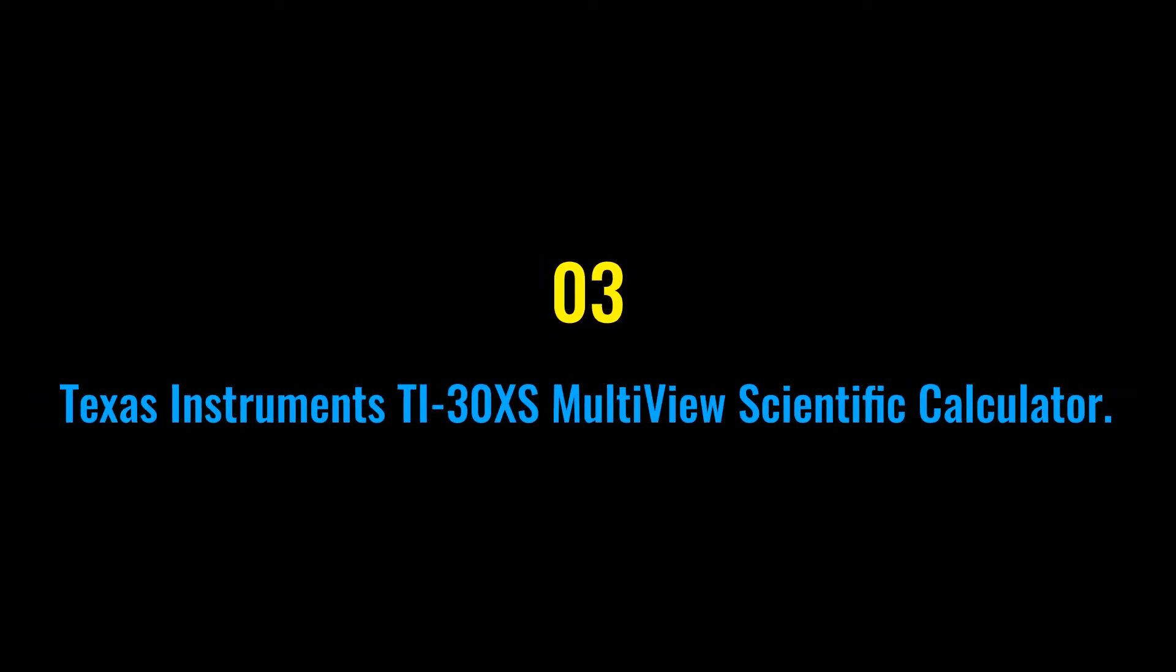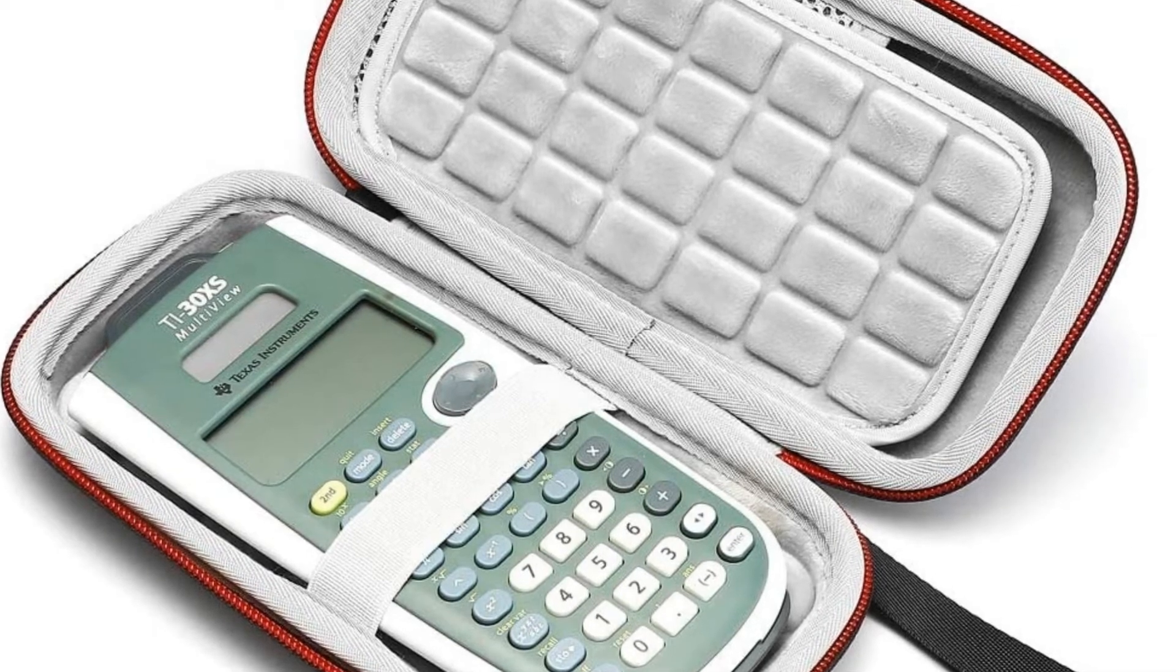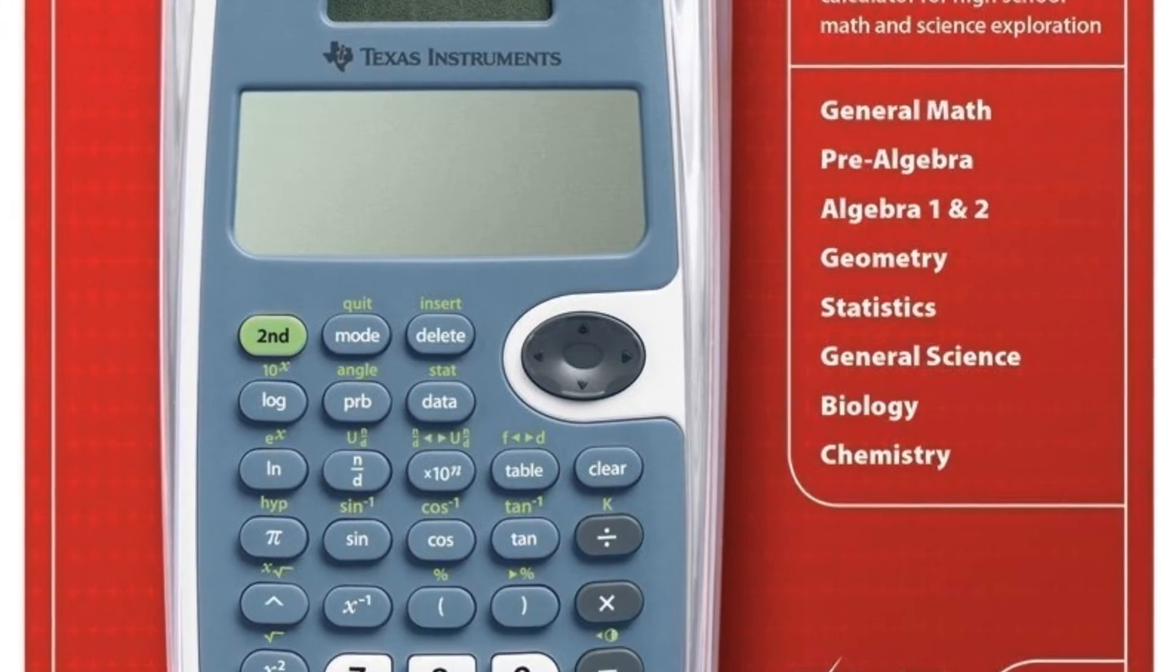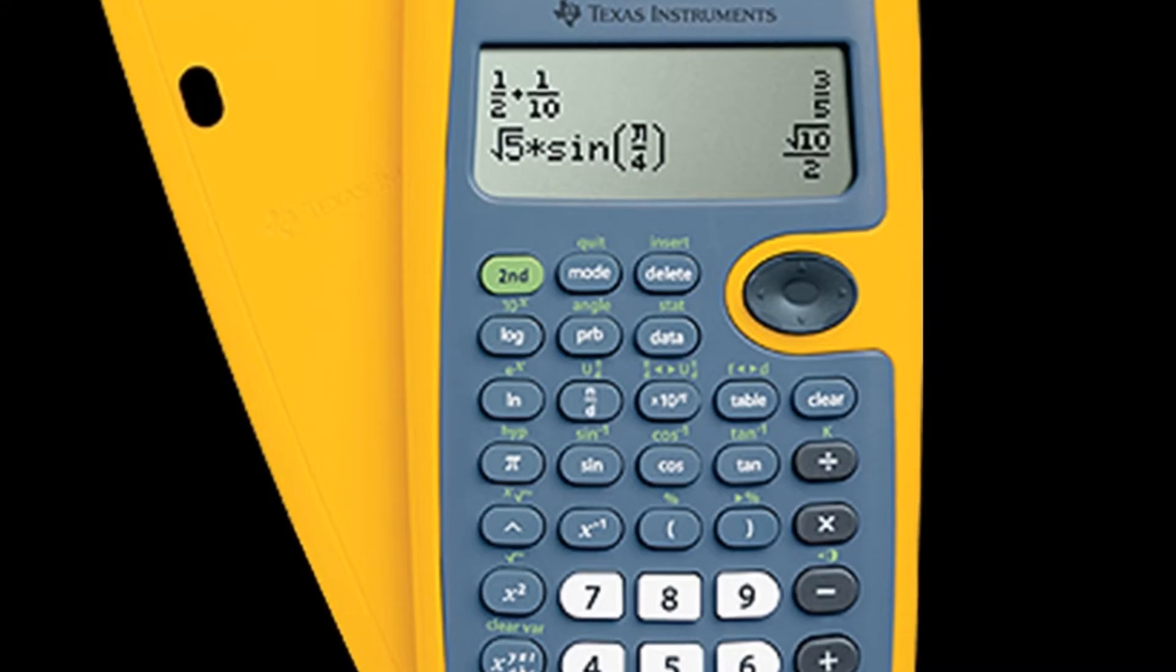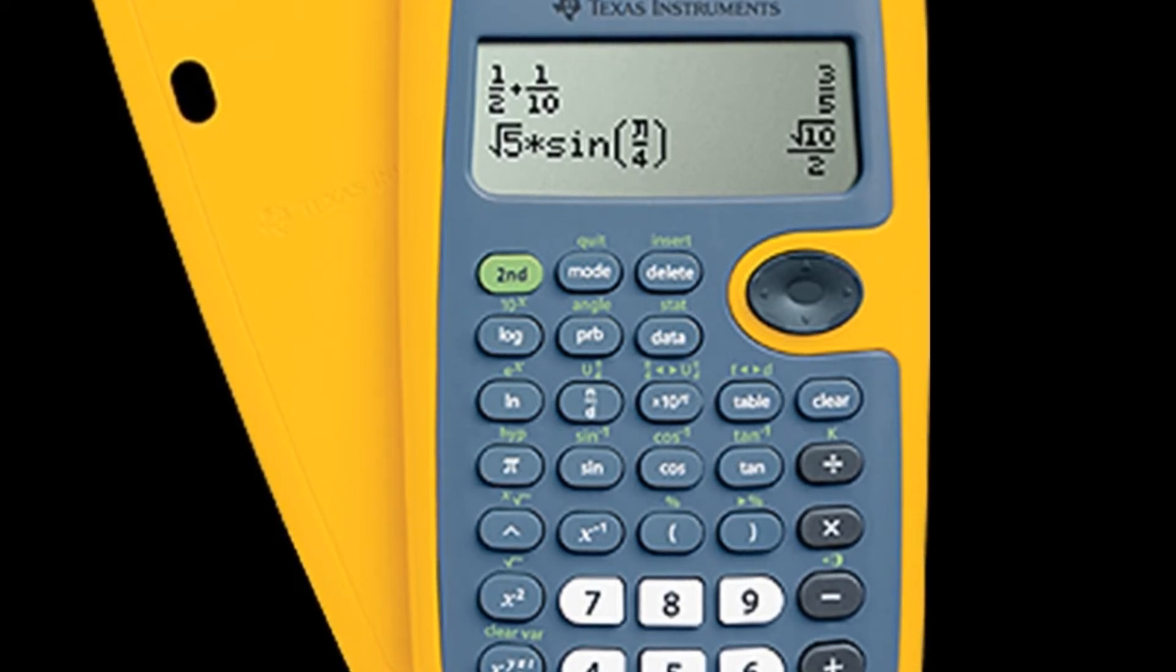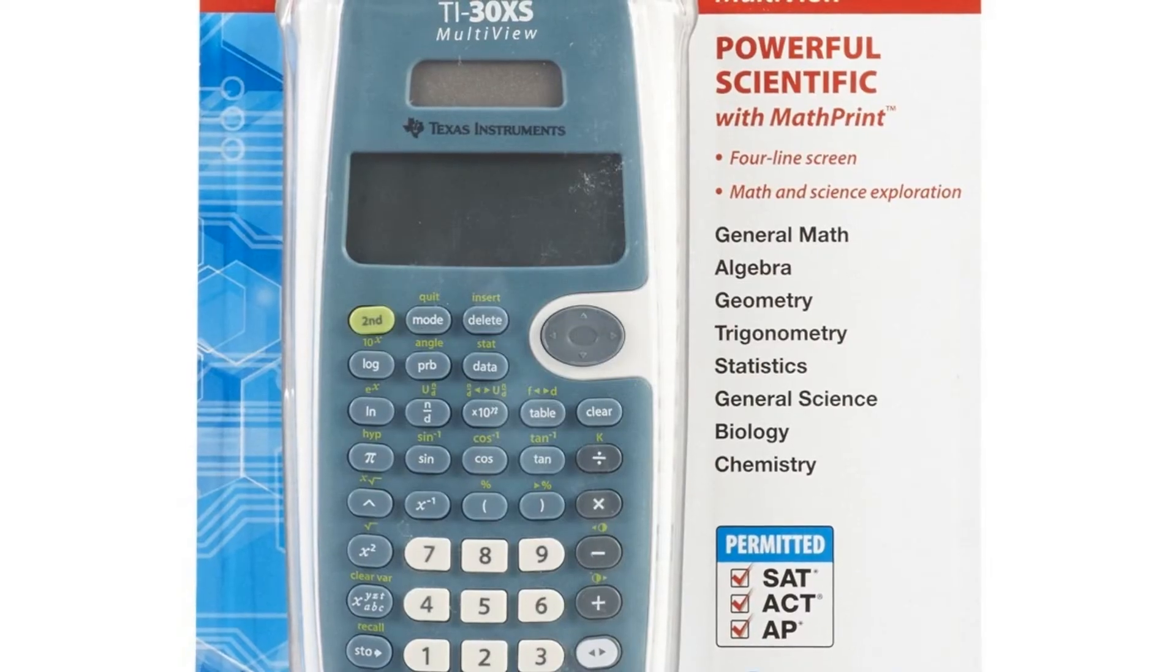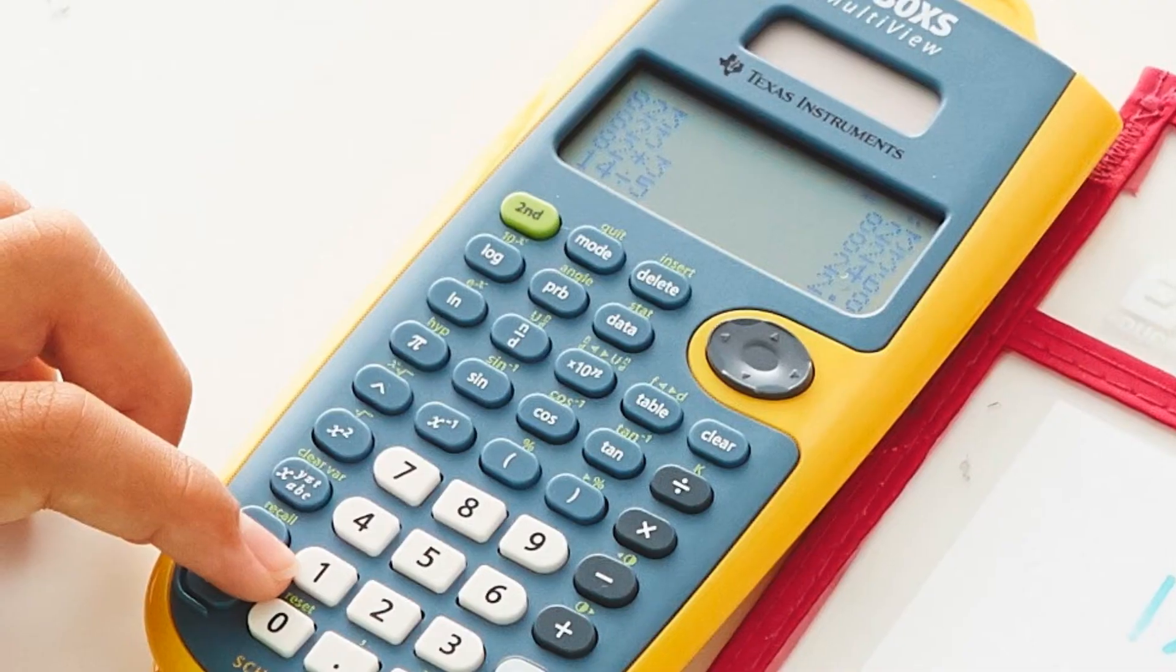Number three: Texas Instruments TI-30XS MultiView Scientific Calculator. Powerful four-line scientific calculator for high school math and science exploration. Designed with unique features to allow you to enter more than one calculation, compare results, and explore patterns all on the same screen. Enter and view calculations in common math notation via the MathPrint mode, including stacked fractions, exponents, exact square roots, and more.